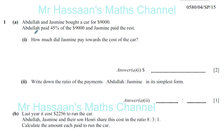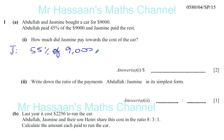First question: Abdullah and Jasmine bought a car for $9,000. Abdullah paid 45% of the $9,000 and Jasmine paid the rest. How much did Jasmine pay towards the cost of the car? Now, there are a number of ways we can tackle this problem. We can say Abdullah paid 45%, the total is 100%, that means Jasmine paid 55%. So for Jasmine, she paid 55% of $9,000, that's 55 over 100 times $9,000, or if you want, 0.55 times $9,000.